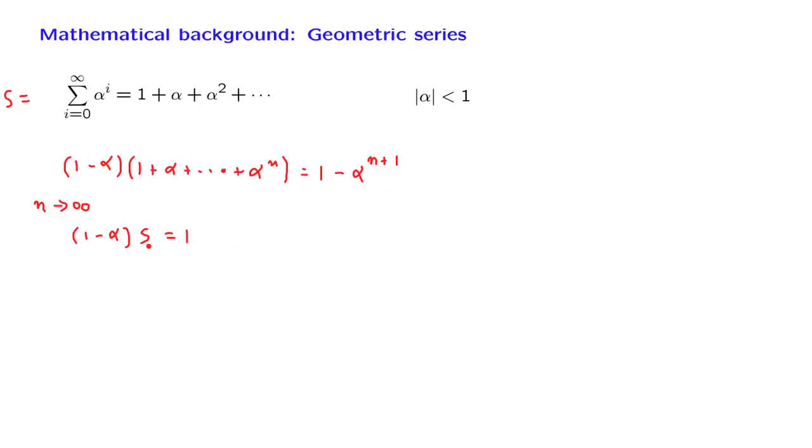We can now solve this relation. And we obtain that s is equal to 1 over 1 minus alpha. And this is the formula for the infinite geometric series.